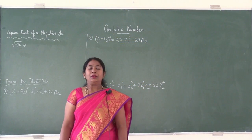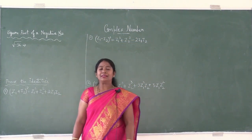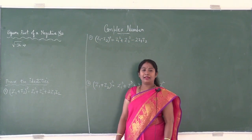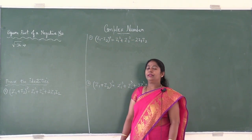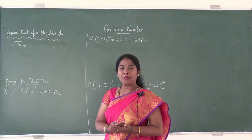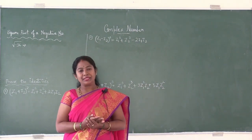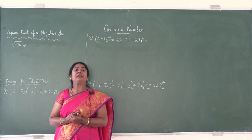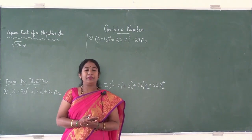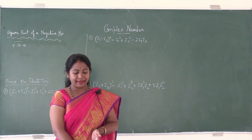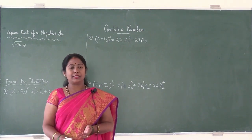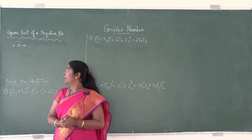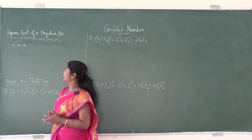Good morning students, welcome back to mathematics class, chapter Complex Numbers, class 2. In the previous session I had discussed what is a complex number, how to represent a complex number, what is a real number, what is an imaginary number, how to represent the conjugate of a complex number, and we also discussed about algebra of complex numbers. Moving on to the next part of the chapter: the square root of a negative number.